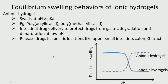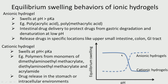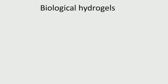We can control where the drug is released based on pH. Cationic hydrogels — polymers from monomers such as dimethylaminoethyl methacrylate (DMEAM) and diethylaminoethyl methacrylate and acrylamide — are used for drug release in the stomach or intracellular environment, where pH is very low. Anionic hydrogels are better suited for intestinal or colon drug delivery. So depending on the pH, anionic hydrogels release at higher pH and cationic hydrogels release at lower pH due to differences in equilibrium swelling.